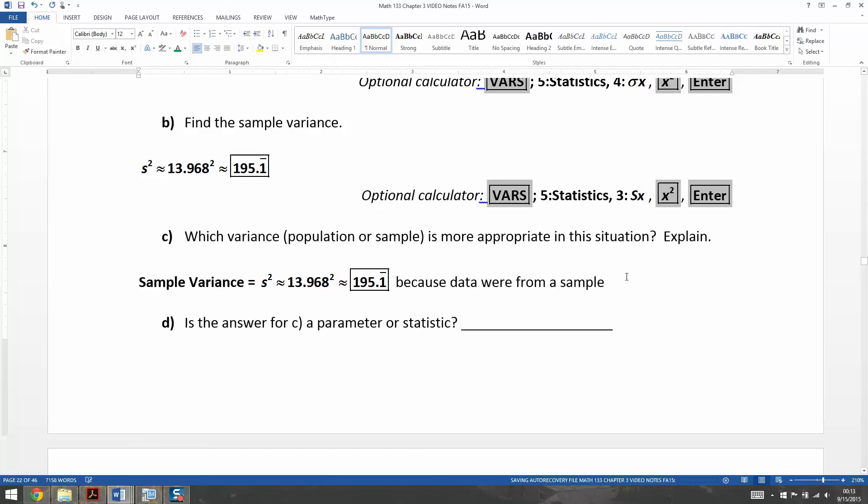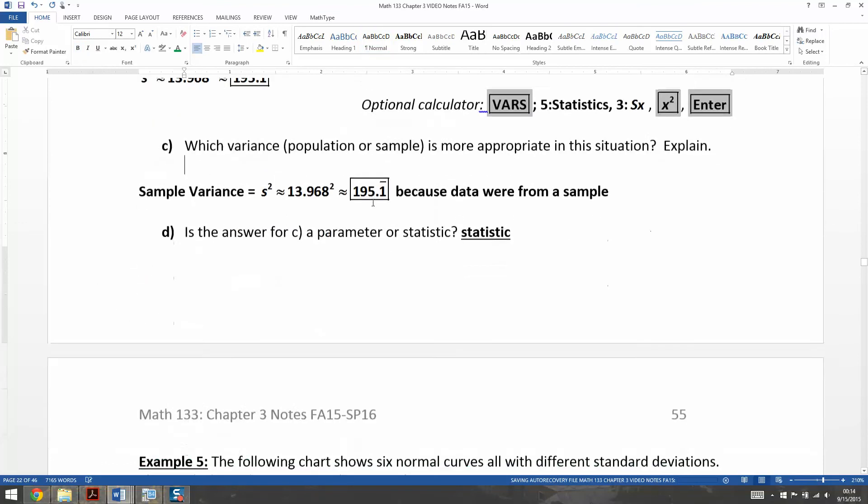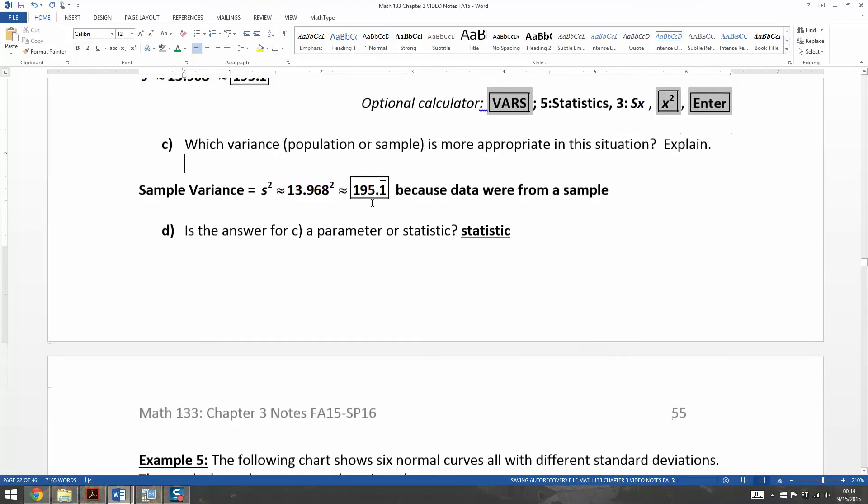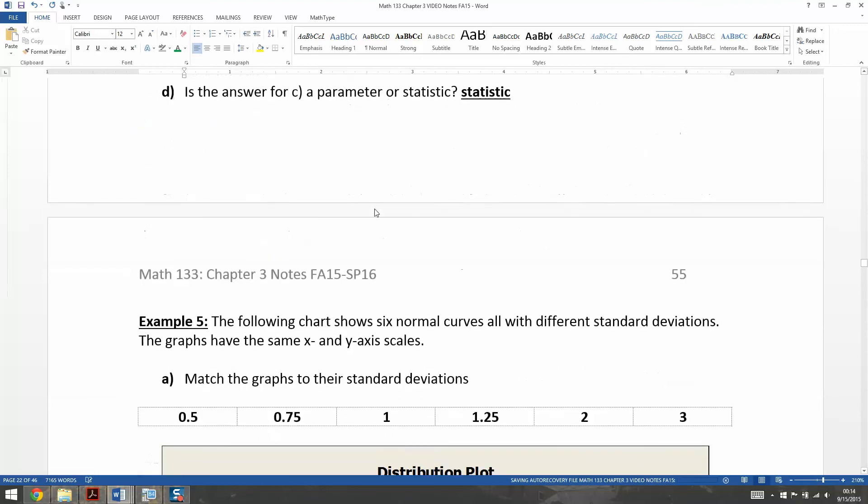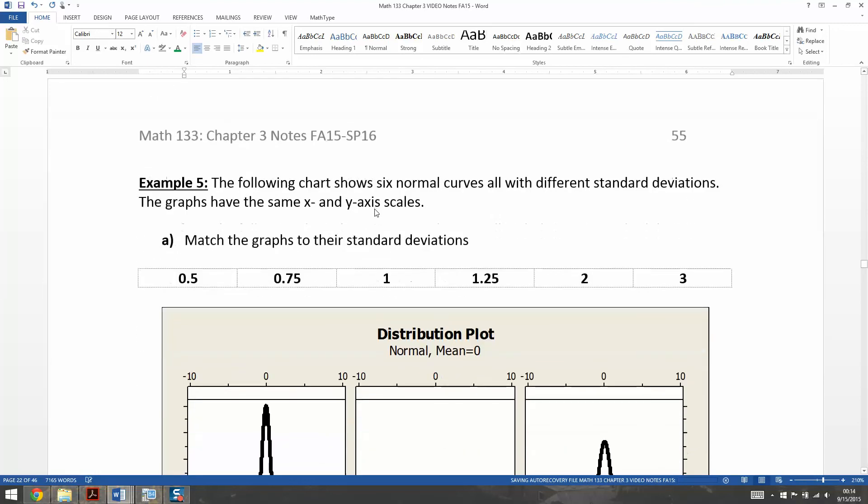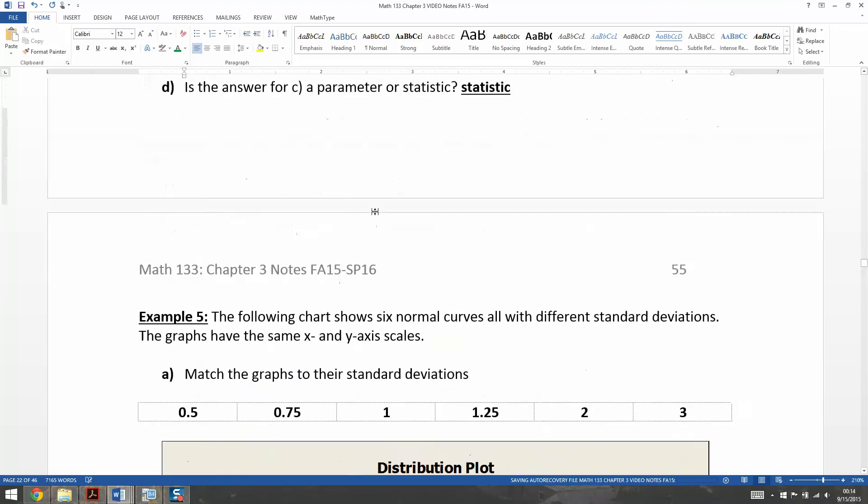All right, now once you know you're using a sample data value like that, then it automatically must be a statistic because statistics come from samples. Parameters are from populations. So this is definitely a statistic because this is from a sample. All right, we're all done with variance. And I'll see you back here in the next video for some analysis of standard deviations with normal curve pictures. So I'll see you then.